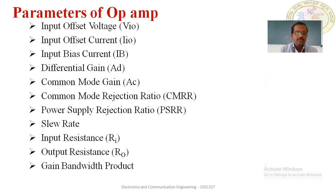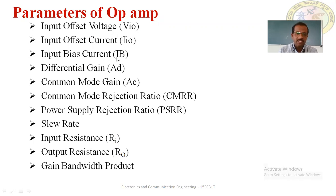The parameters of the operational amplifier are: input offset voltage VIO, input offset current IIO, input bias current IB, differential gain AD, common mode gain AC, common mode rejection ratio CMRR, power supply rejection ratio PSRR, slew rate SR, input resistance Ri, output resistance Ro, and gain bandwidth product. These are all the parameters of the operational amplifier.